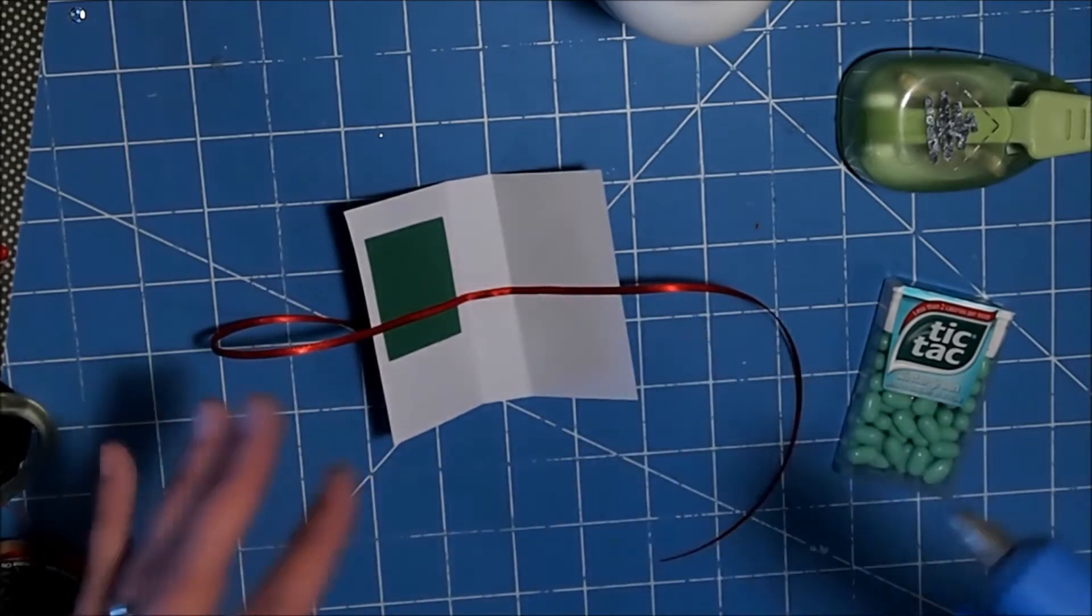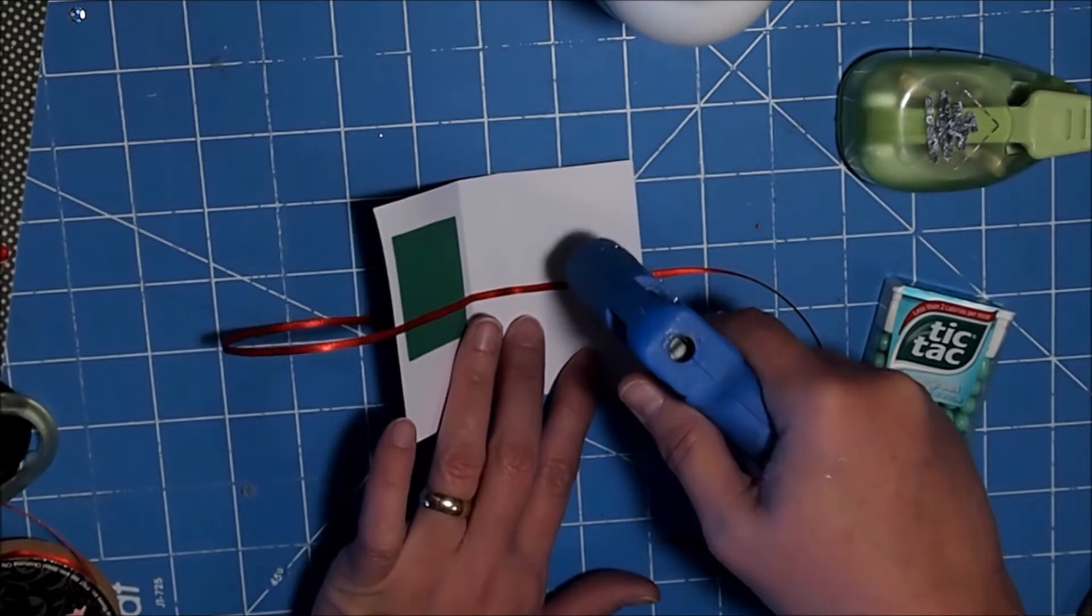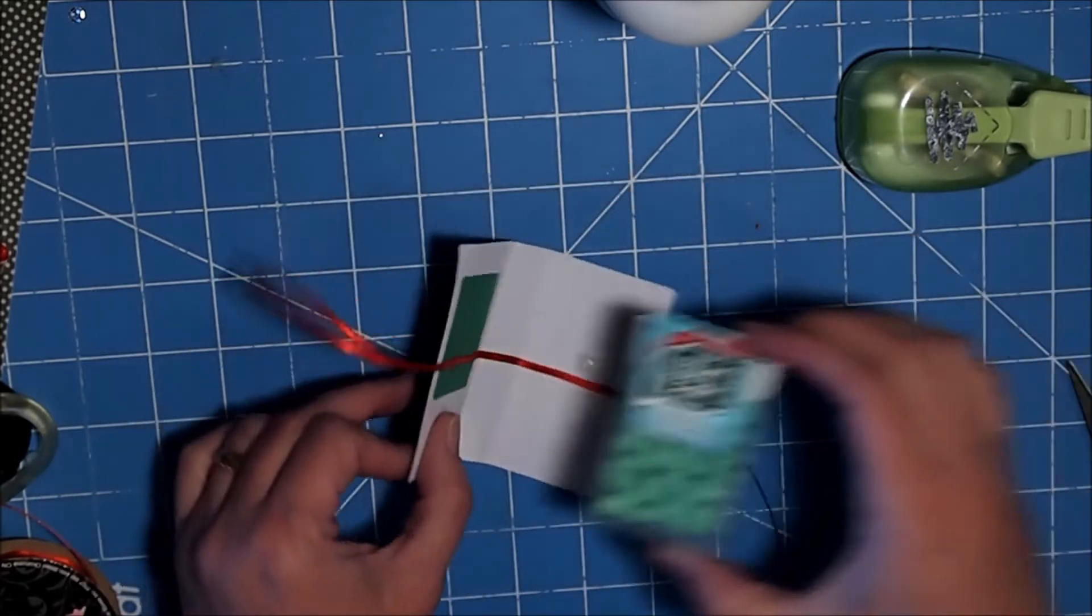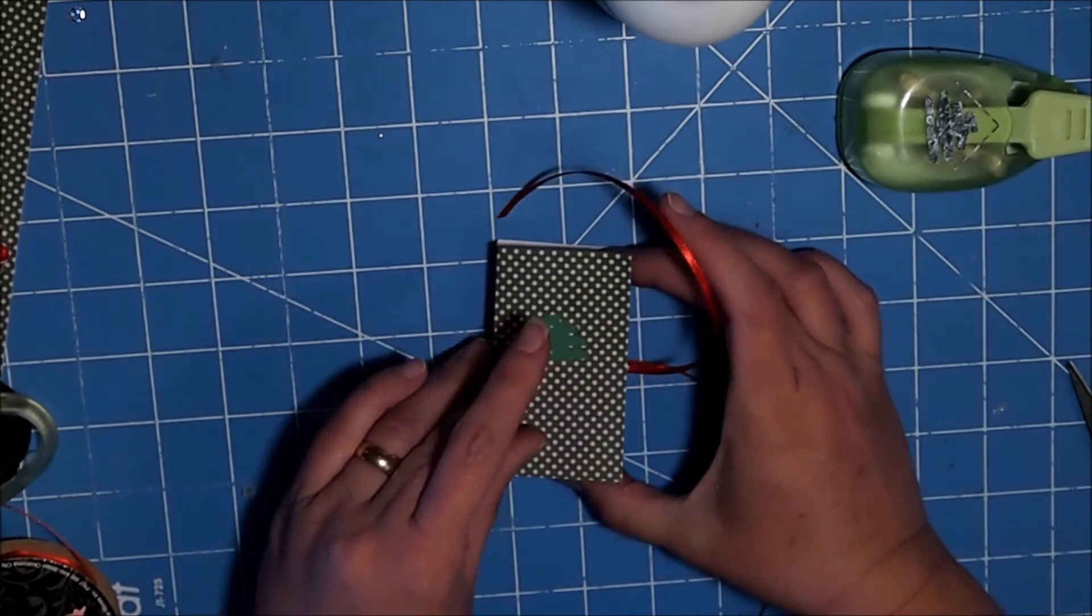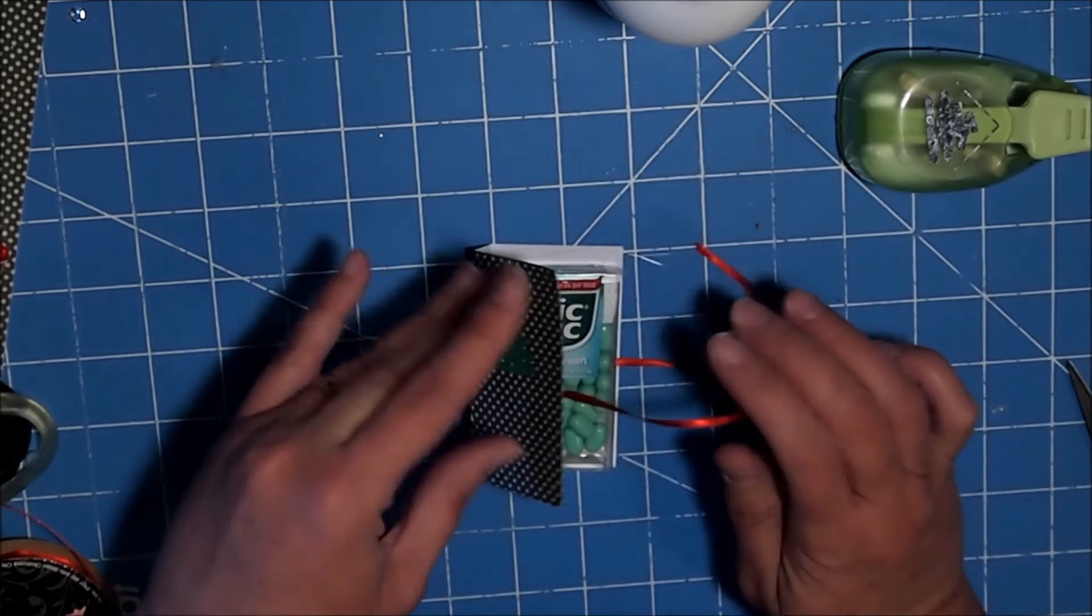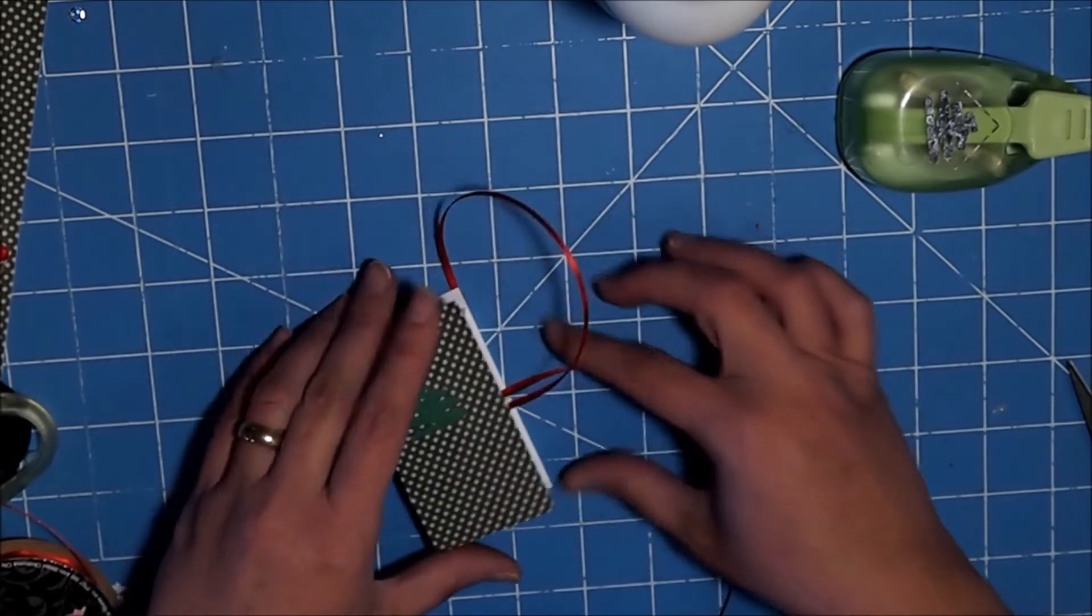And sometimes it's nice just to have a really easy way to wrap something and really quick so you're not spending a lot of time. I'm just going to put a little bit of hot glue here to attach my Tic Tacs so that they don't fall out whenever they're in our stocking. Isn't that cute?